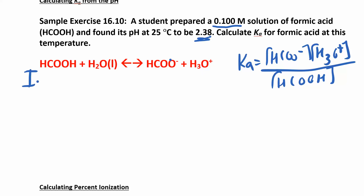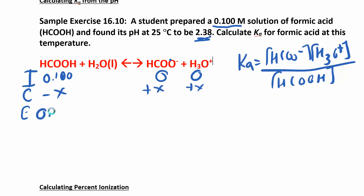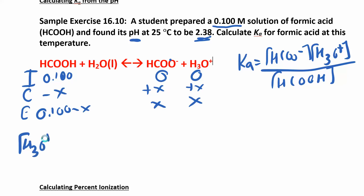Set up your ICE table the way we did in the last chapter. Initially we have a 0.1 molar concentration and no products. Since everything is 1-to-1, we subtract x on the reactant side and add x on the product sides. At equilibrium: 0.1 minus x, x, and x. If we had the Ka we could plug this bottom row in and solve for x, but here we're finding Ka — which means we already know x. When they give you the pH, that's really giving you the equilibrium hydronium concentration.